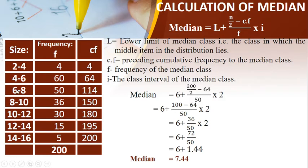So L is 6 and CF is before the arrow 64 and F is pertaining to the median class which is 50 and the class size is 2. So substituting in our formula, median equals 6 plus n by 2, 200 by 2 minus 64 by 50 into 2. So on solving, we have subtracted, divided, multiplied and then we have added to 6. So it is 7.44 which is the median.